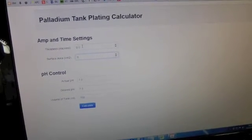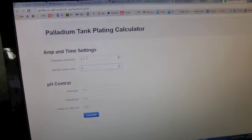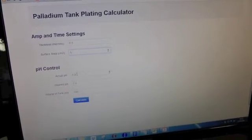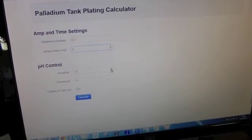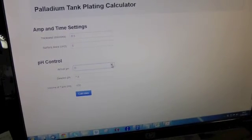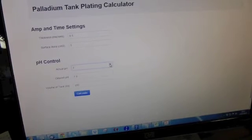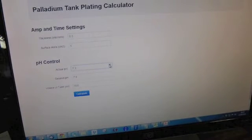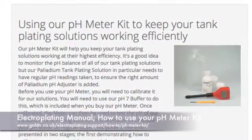The calculator includes a section where you can enter in the actual pH of your solution. We advise checking and, if necessary, adjusting the pH of your palladium tank plating solution on a regular basis. For guidance on this, please see the relevant section in our electroplating manual.